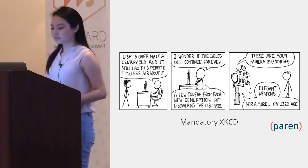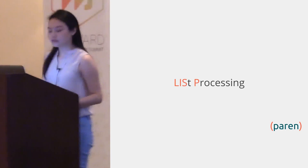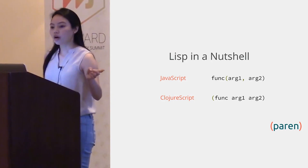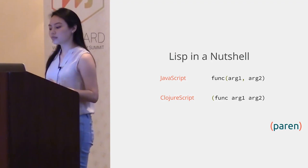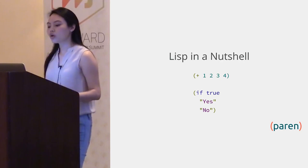Lisp stands for list processing. Let's take a minute to see what Lisp looks like. In JavaScript, a function call looks like this — you have an operator with invocation of arguments. In Lisp, a function call starts with the operator followed by arguments, with parentheses around them. So you can chain operations like so. The result of the first one would be 1, 2, 3, and 4. Its conditional operation looks like this.